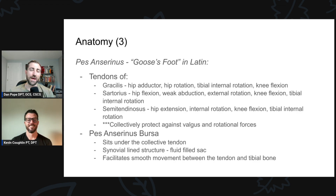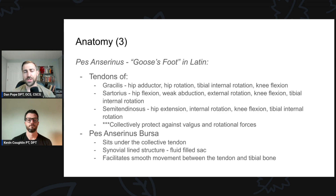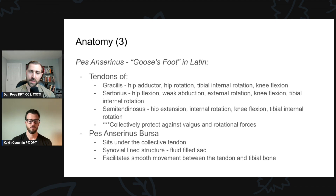A little anatomy about pes anserine. It's basically a series of tendons from the gracilis, sartorius, and semitendinosus muscles. The actions of these muscles may be relevant in treatment. The gracilis is a hip adductor, performs hip rotation in both directions depending on the degree of hip flexion or extension, and also performs tibial internal rotation and knee flexion.